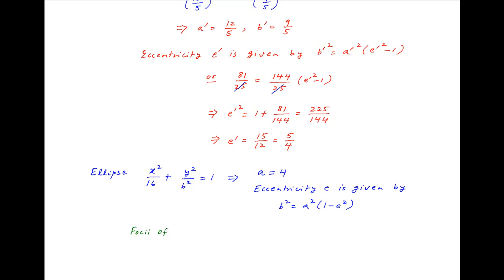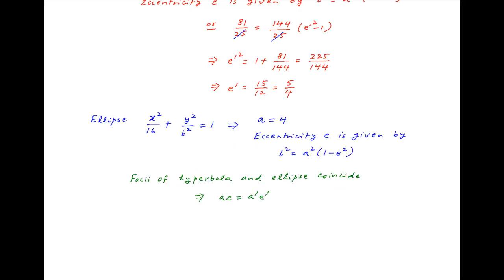Now, we are given that the foci of the hyperbola and the foci of the ellipse coincide. This implies that A·E = A'·E'. Plugging in the values of A, A', and E', we get 4E = (12/5)·(5/4). The right-hand side simplifies to 3, and therefore the eccentricity of the ellipse E is equal to 3/4.